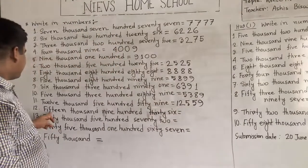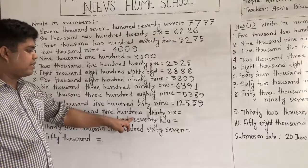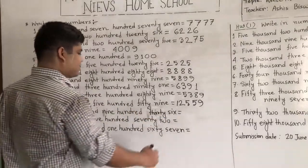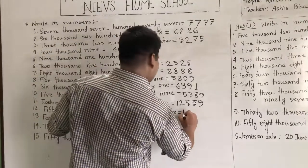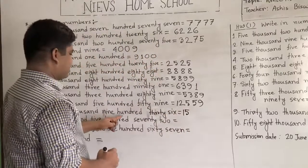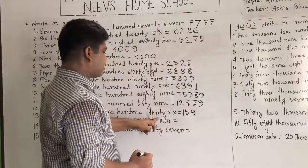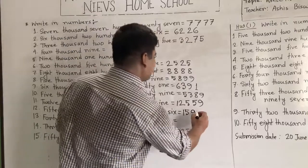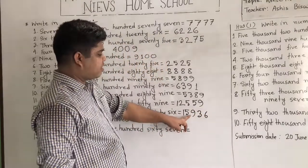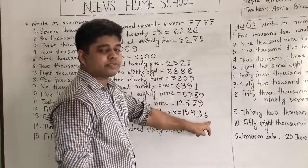Our next number is 15,936. So we write 15 first as 15,000. Then 900, so write 9. Then 36. So it is read as 15,936.